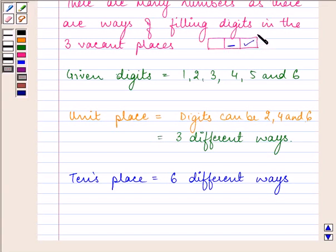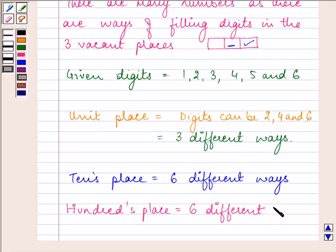The unit digit can be filled up in three different ways, the ten's place can be filled up in six different ways. Now the remaining one is the hundred's place digit. It can also be filled up by any of the six digits that are given to us, and hence there are six different ways of filling this place also.